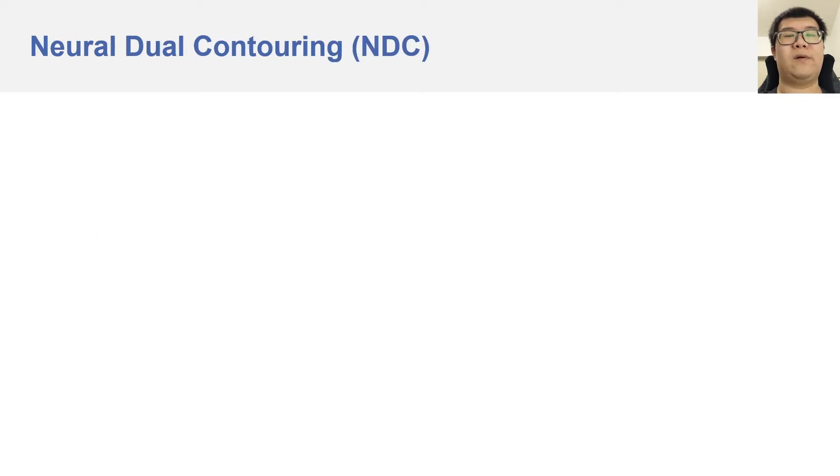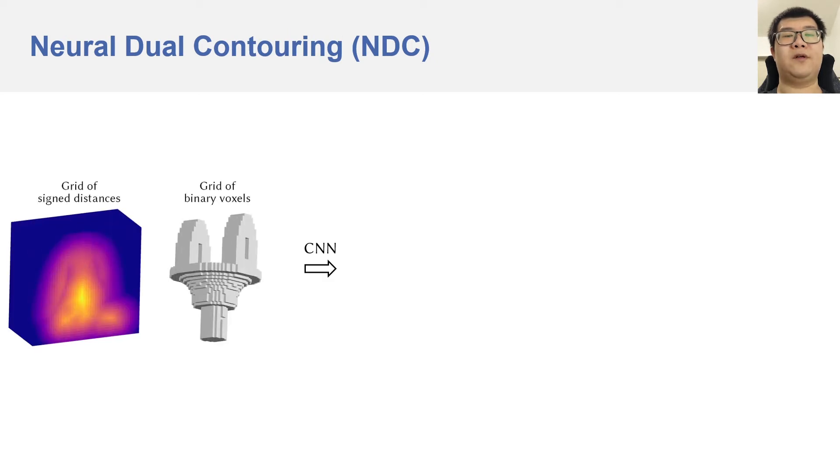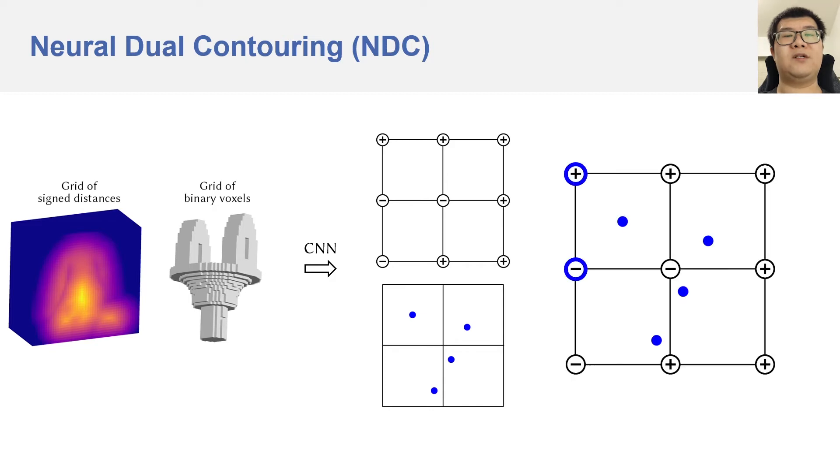Our data-driven approach does not have this drawback. In neural dual contouring, we employ a convolutional neural network trained on example 3D surface data to predict the grid of signs as well as the vertex locations. Then we simply apply the dual contouring meshing algorithm to create the output polygonal mesh. Therefore, our method enjoys the simplicity of dual contouring while taking exactly the same input as marching cubes.